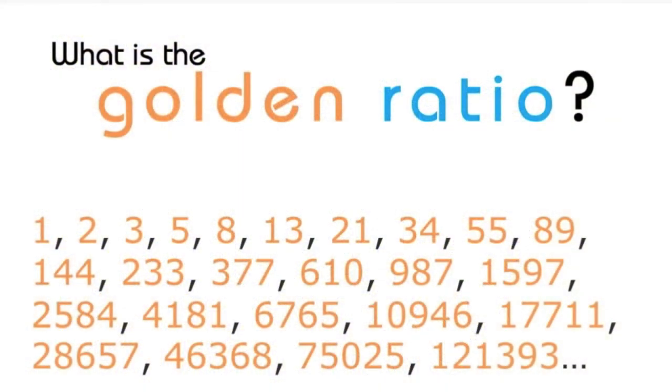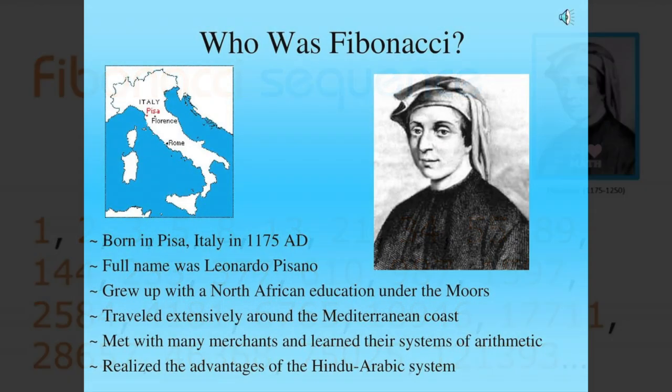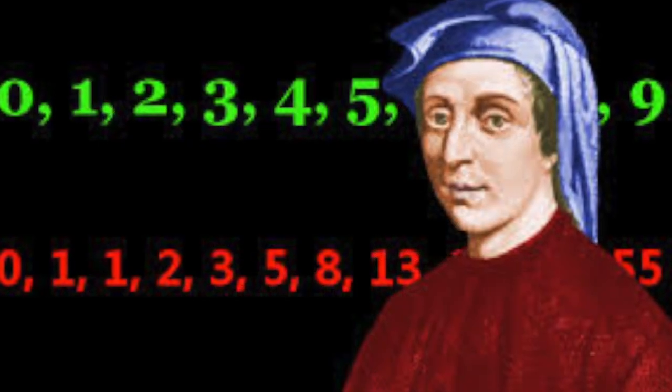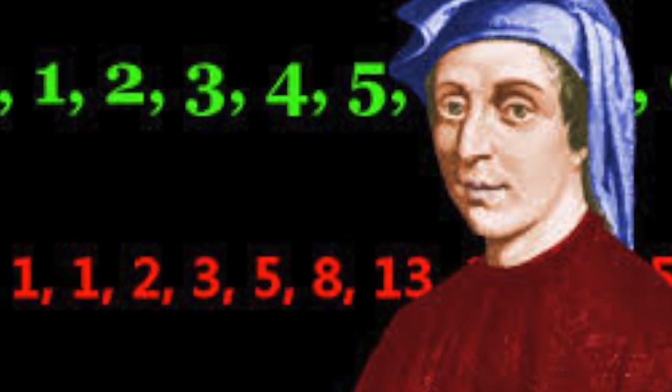So what is the golden ratio and who is this Fibonacci guy? Well, Leonardo Fibonacci was an Italian mathematician who was often credited with this amazing mathematical formula. However, it's recorded that when he was asked where it came from, he replied, it's been around forever.